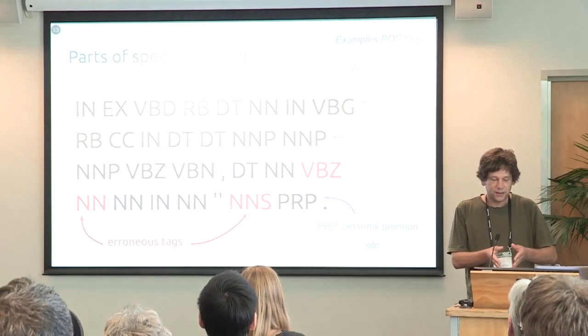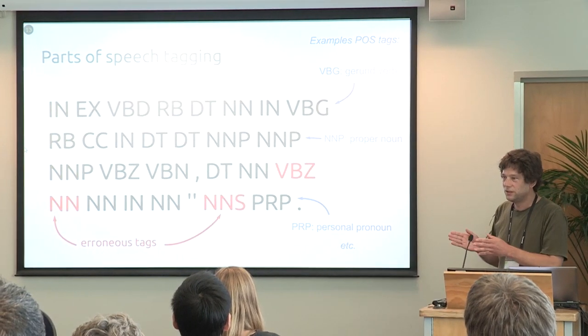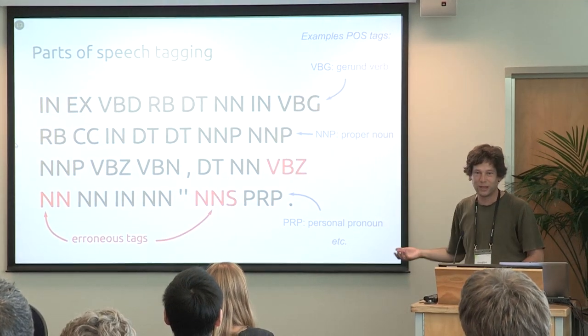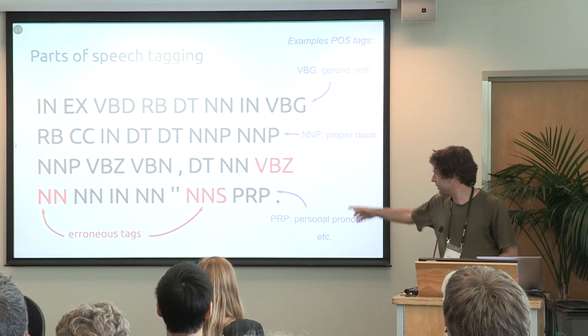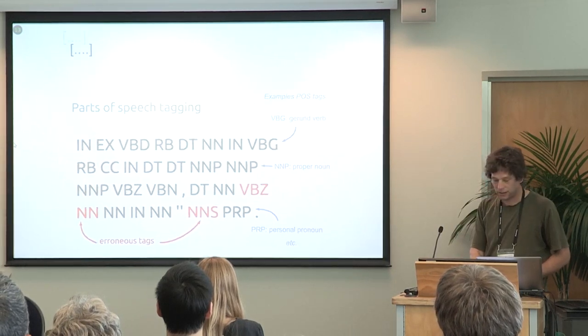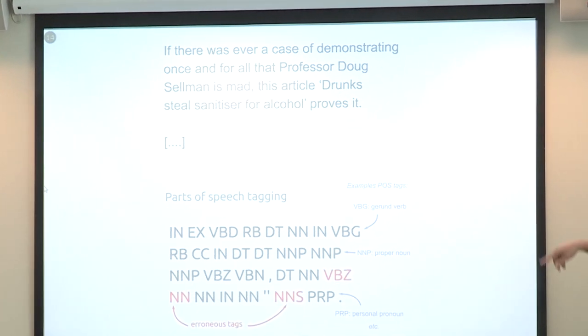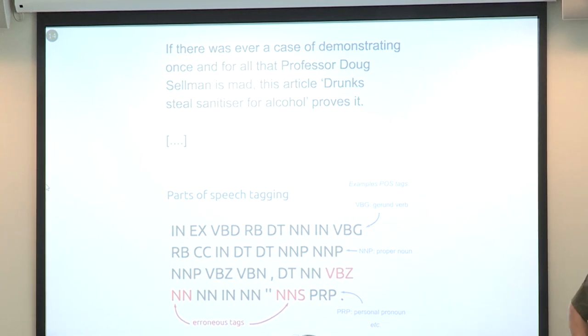Now if you analyse this, if you just look at the words or the text as it is, the overwhelming thing in the features is the content — the names, and it's talking about alcohol. So to analyse it, the first thing I did is looked at the parts of speech using a ready-made parts of speech tagger. A part of speech just means it's a noun or a verb — that kind of thing. It makes a few mistakes, but overall it gets it pretty good.